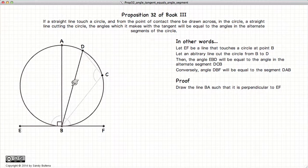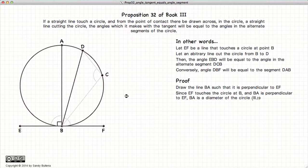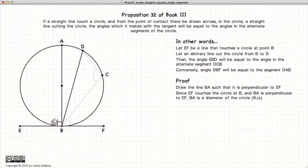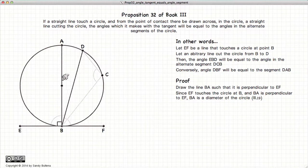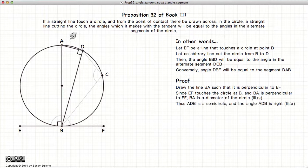To prove this, first we draw a line AB at right angles to EF. Now since EF touches the circle and AB is at right angles to EF, AB must also be the diameter of the circle, according to Proposition 19 of Book 3. So if AB is the diameter, this is a semicircle, and therefore angle ADB is equal to a right angle.